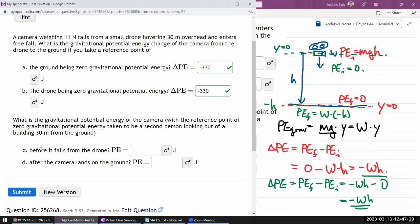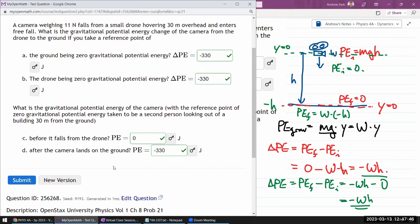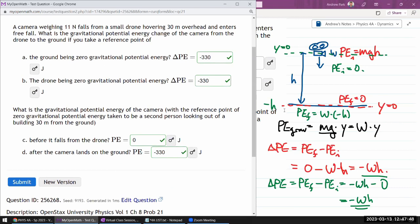So I'll use what I sketched out in green. So before it falls from the drone, it has zero joules as its potential energy with this particular reference point. And after it lands, it has minus 330 joules. So good. A long question but not difficult unless you make sign errors.